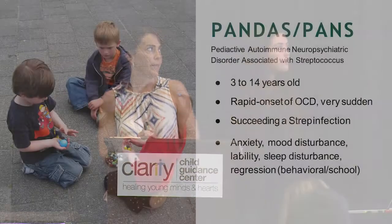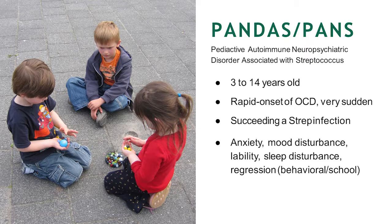We want to make sure, especially for those treating children, that you're aware of PANDAS and PANS. This is a syndrome where OCD symptoms come on very quickly as a result of strep or other infections in childhood. Between ages 3 to 14, children can have a rapid onset of OCD symptoms and rapid behavior change. PANS is the same thing but connected to infections other than strep. If you see a child with no history of OCD symptoms whose parent says they had strep last week and suddenly they're very symptomatic, send them back to their pediatrician — they would need treatment with antibiotics and IVIG before psychological treatment would be effective.